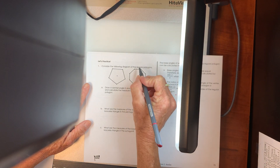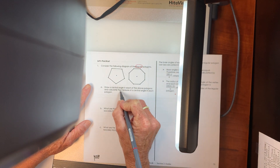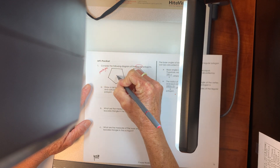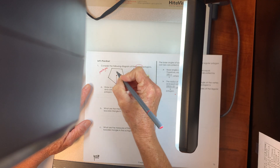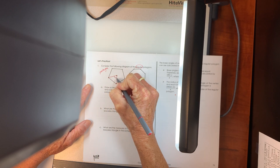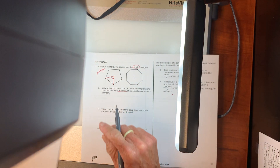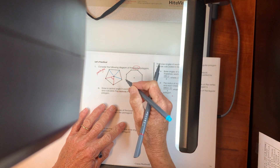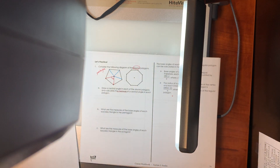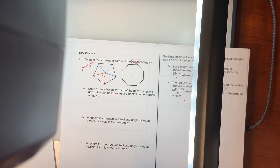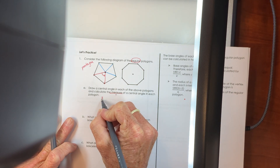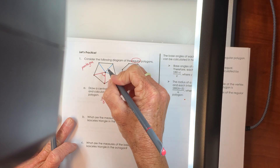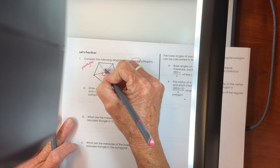Let's draw the central angle in each of these regular polygons and determine their measures. This polygon has five sides — it's a pentagon. The central angle goes from the center to two adjacent vertices. Since it's regular, we split it into five equal, congruent pieces. To calculate the central angle: 360 divided by 5 equals 72°. So in a pentagon, each of the five central angles is 72°.